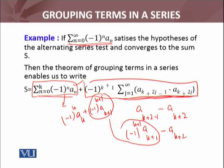The second term has minus 1 raised to power k plus 2, so the next term is minus 1 raised to power k plus 2 times a_{k+2}. We have written two terms, and this series which is convergent — when we introduce two groups, we have shown that nothing is lost while making groups of that particular series.